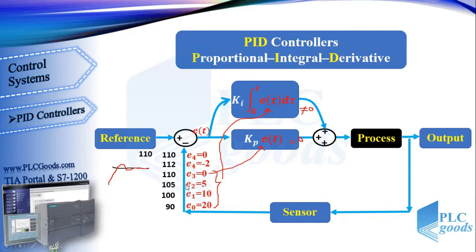Note that at the beginning, the size of the errors is large and the elapsed time is small. Therefore the output of the proportional term will be larger and will have the major role in controller performance. As time goes on and the error size decreases, the proportional output is close to zero and the integral term will determine the controller output.